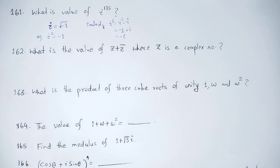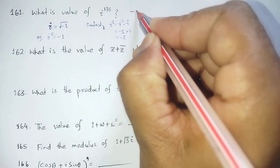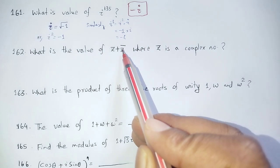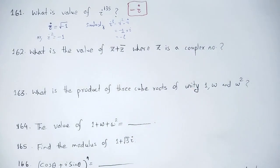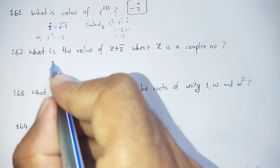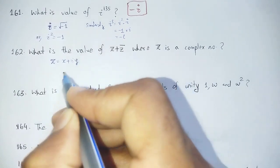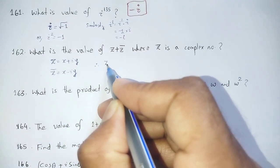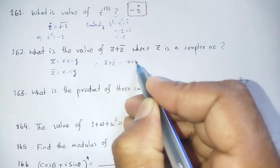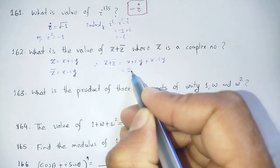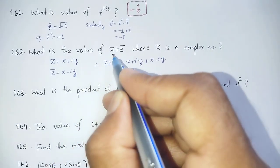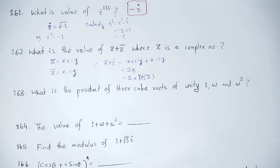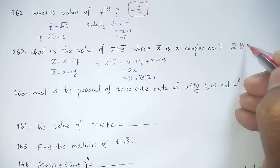Next question: What is the value of z plus z-star (z-bar), where z is a complex number? Here z = x + iy and the conjugate z* = x − iy. So z + z* = (x + iy) + (x − iy) = 2x, which equals two times the real part of z.